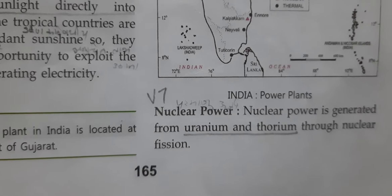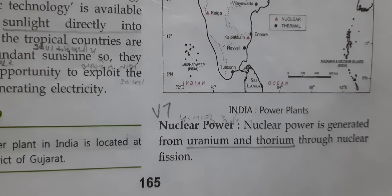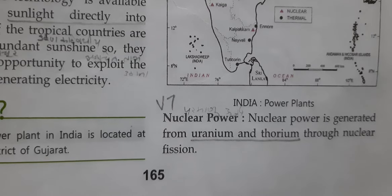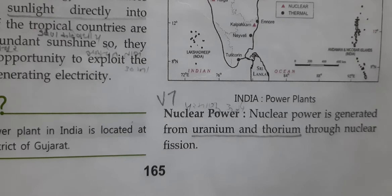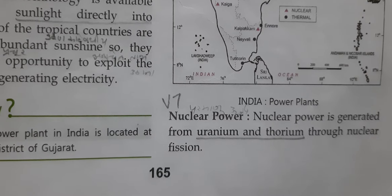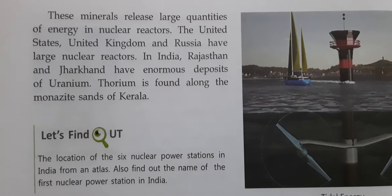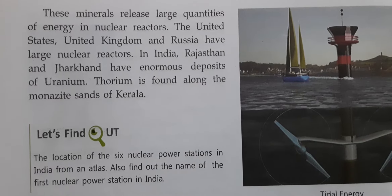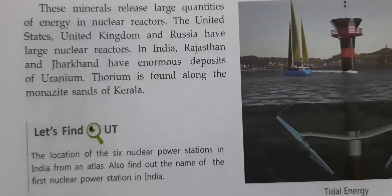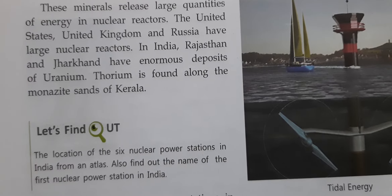Nuclear power is generated from uranium and thorium through nuclear fission. These minerals release large quantities of energy in nuclear reactors. The United States, UK, and Russia have large nuclear reactors. In India, Rajasthan and Jharkhand have enormous deposits of uranium.